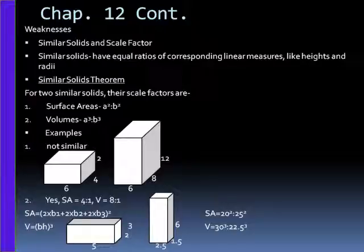For example 2, yes, because if you do have the surface areas, you get 20² is to 25², and 30³ is to 22.5³, which if you simplify, equal each other in the ratios of 4 to 1 and 8 to 1.